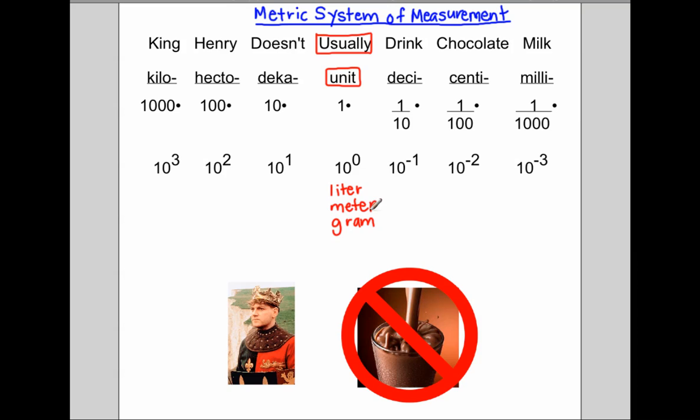Meters are the metric units for length. And grams are the metric units for mass.